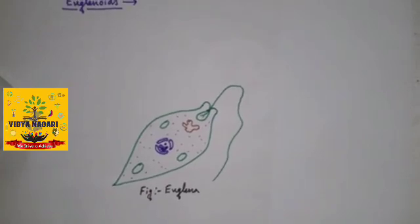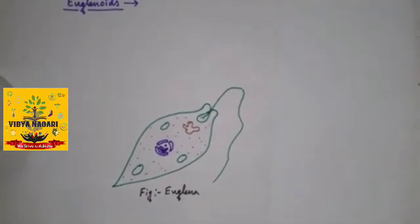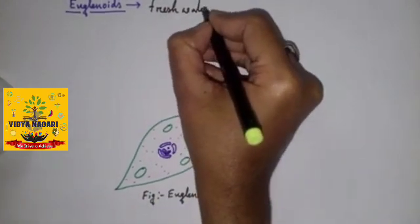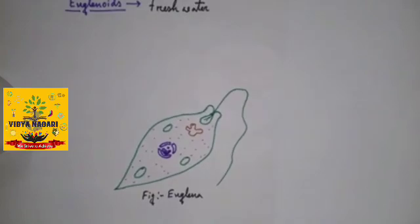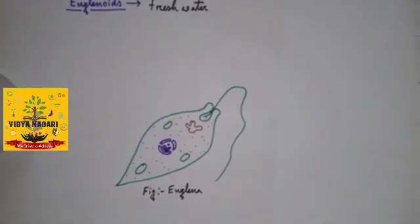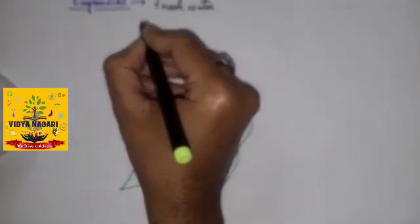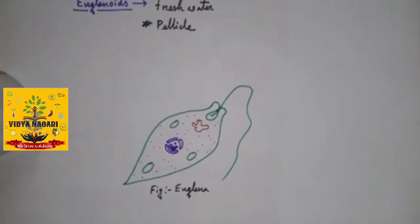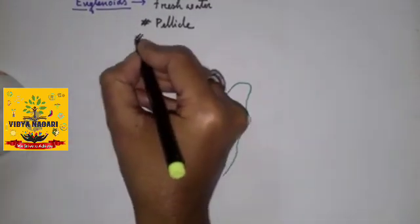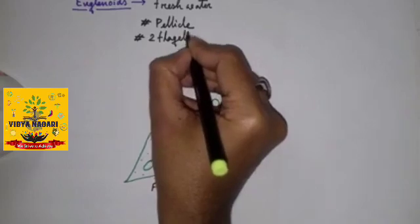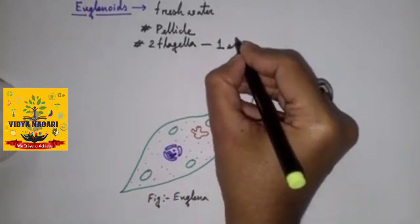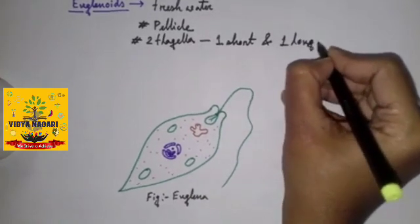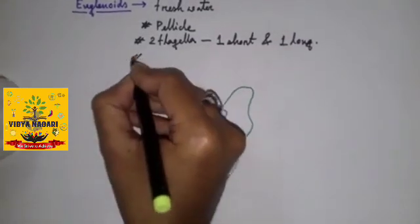Now another group Euglenoids. Majority of them live in fresh water. They are found in stagnant water. Instead of cell wall they have a protein rich layer called pellicle which gives flexibility to their body. They have again two flagella, one short and other long. They are photosynthetic.